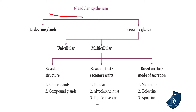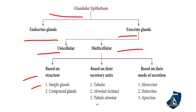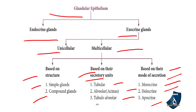The glandular epithelium is classified into endocrine and exocrine glands. Endocrine means ductless glands which secrete hormones. Exocrine glands have a duct and are classified into unicellular and multicellular. Multicellular glands are further classified by structure into simple and compound glands; by secretory units into tubular, alveolar or acinus, and tubuloalveolar; and by mode of secretion into merocrine, holocrine, and apocrine.